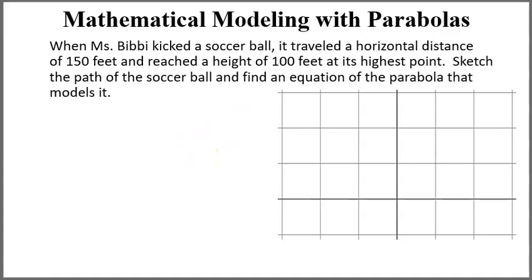Okay, so we're going to talk about how to use parabolas to model situations and then how to come up with the equations to them. Let's read the first problem. It says, when Miss Beebe kicked a soccer ball, it traveled a horizontal distance of 150 feet and reached a height of 100 feet at its highest point.